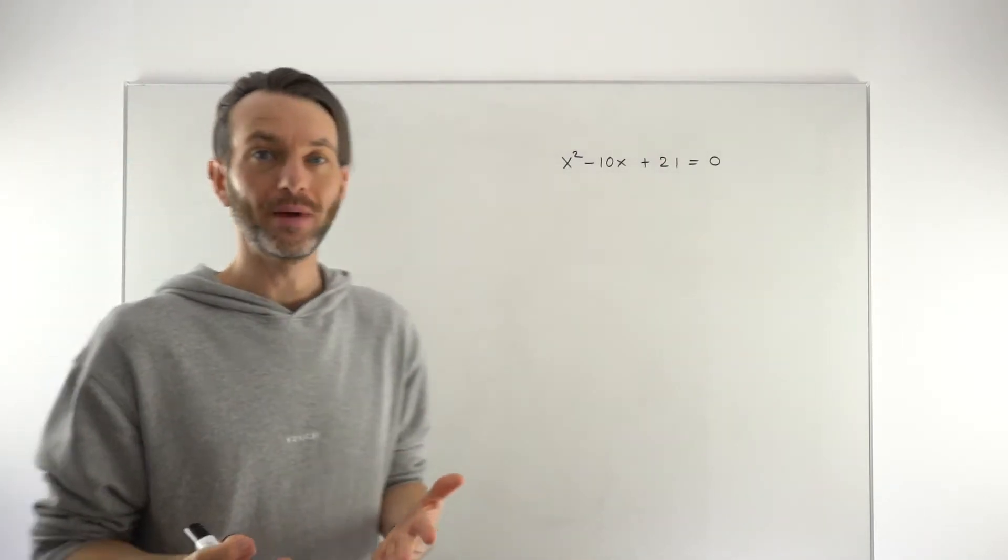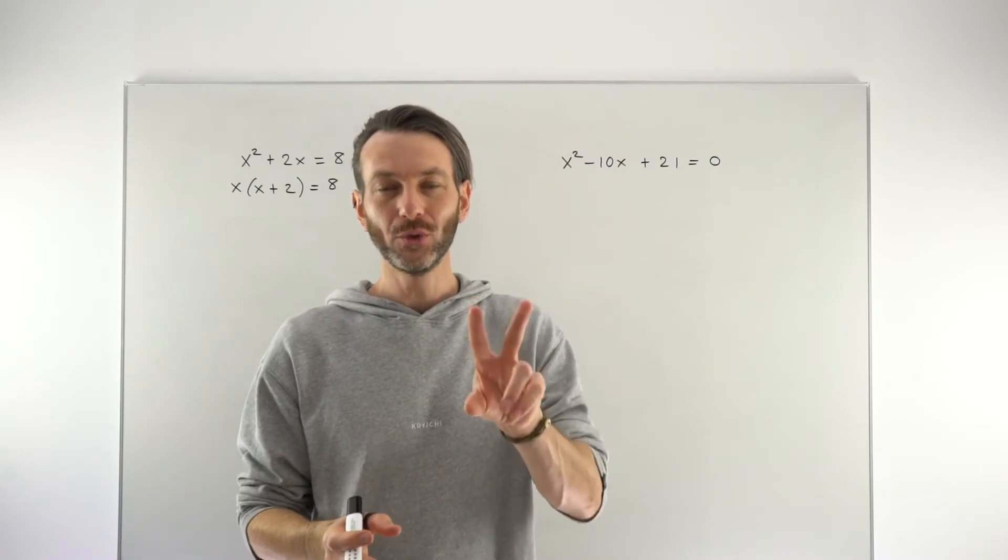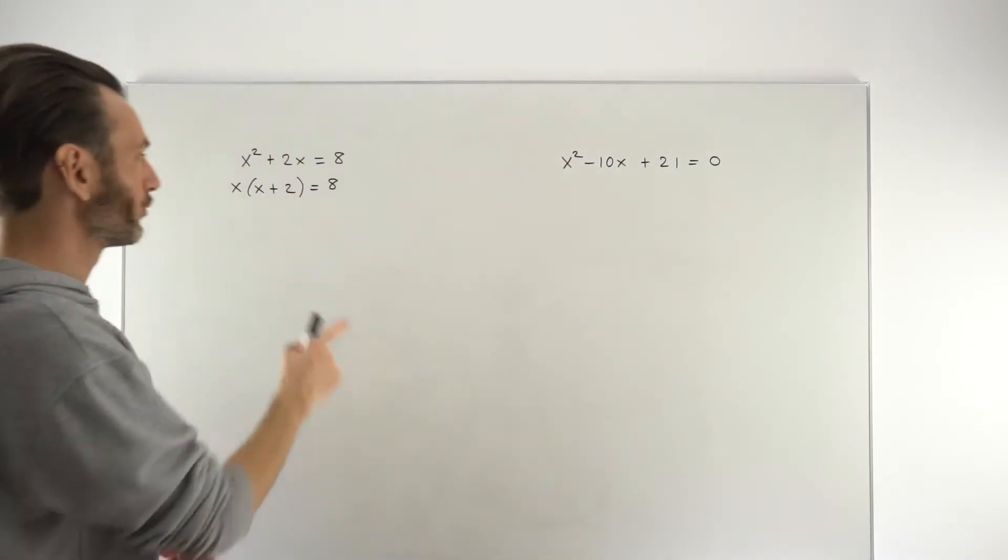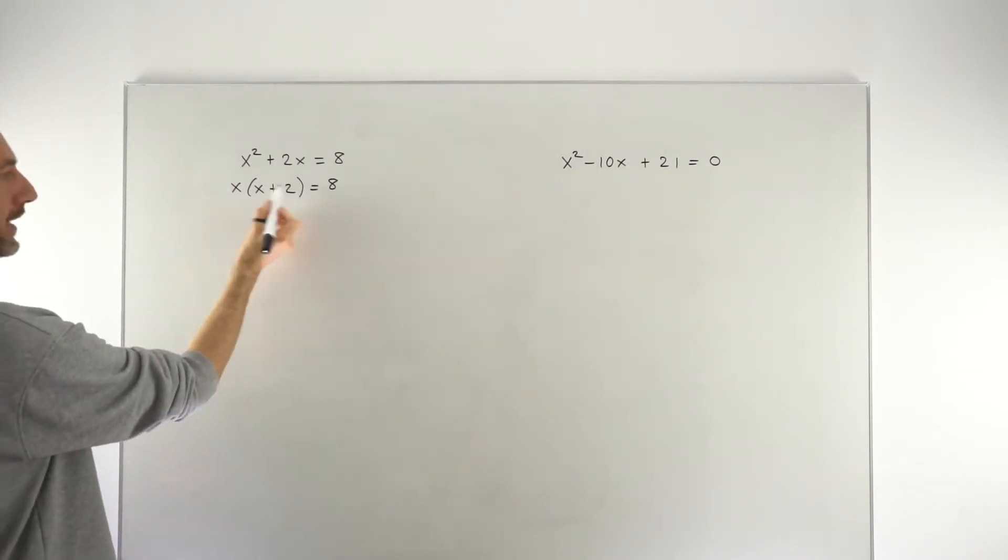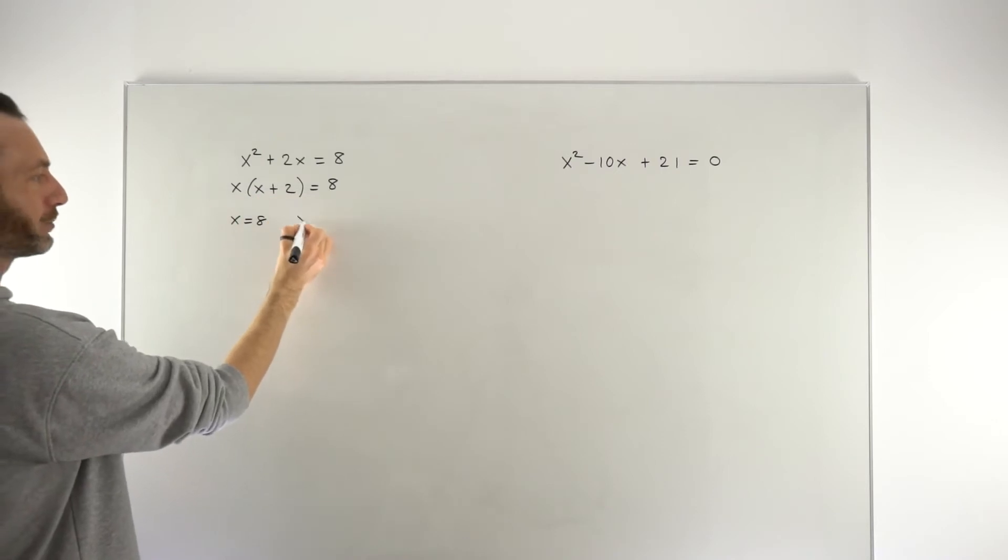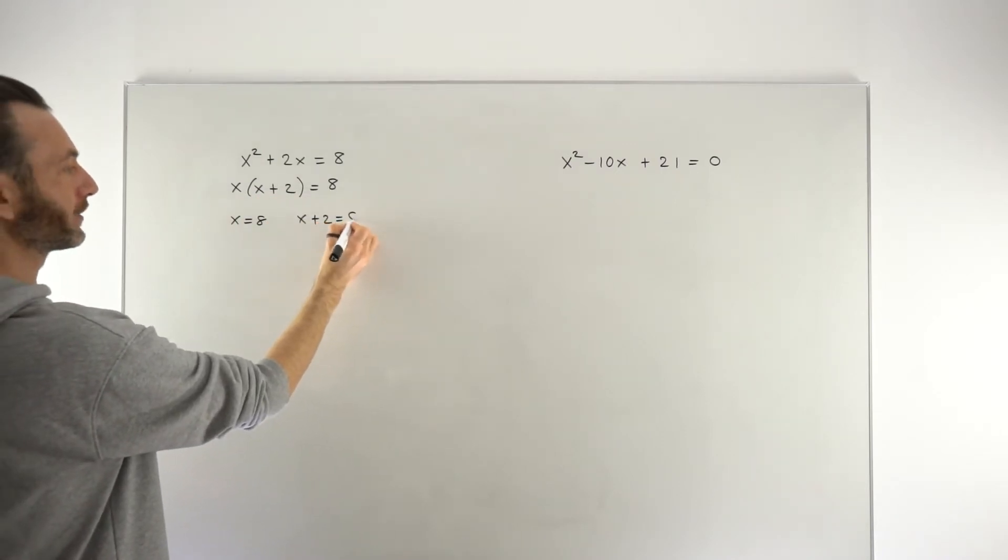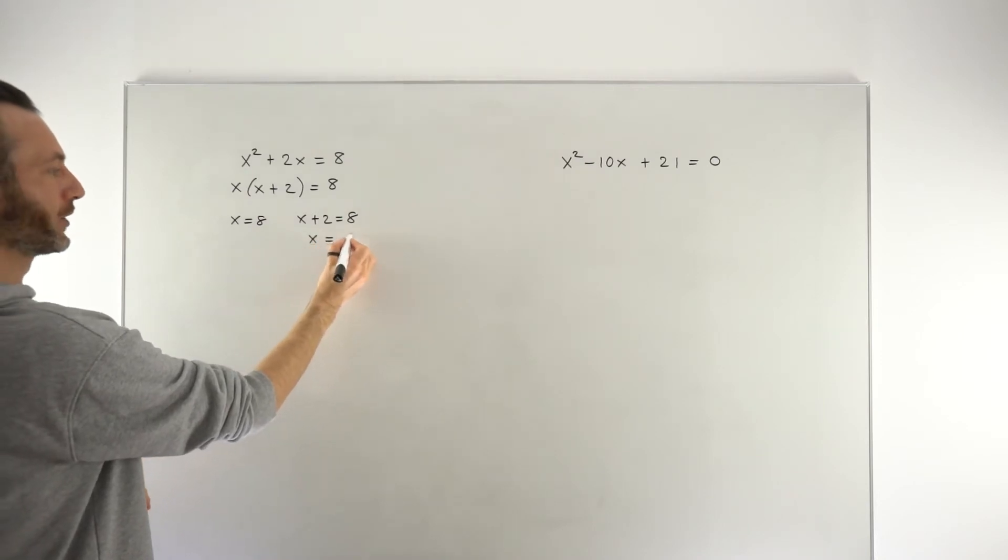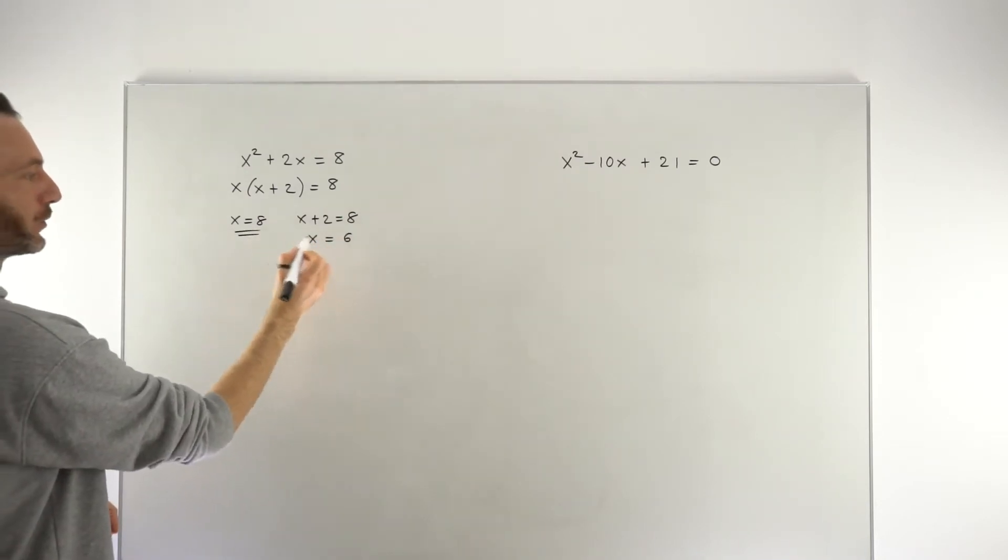And then they kind of also remember that these generally have two solutions and there's something to do with splitting it off into two equations. And they'll go right I've kind of got that now because I can go x equals 8 and they'll write that down as a first solution. And then I've got this x plus 2 equals 8 and that's going to give me my second solution and I'll go ahead and solve this to get x equals 6. And these are the two solutions.